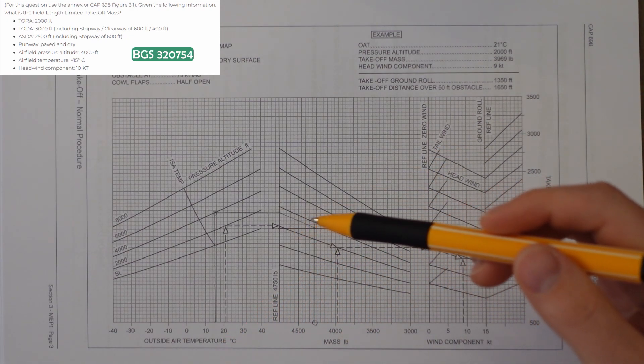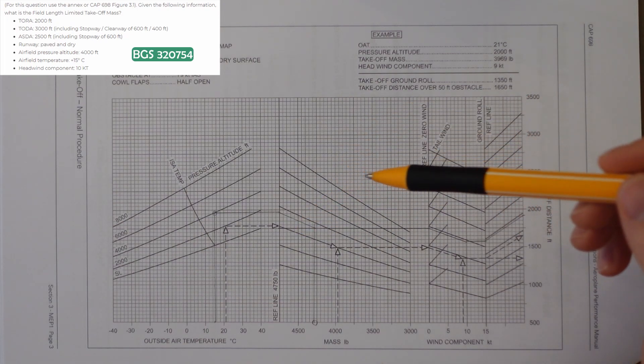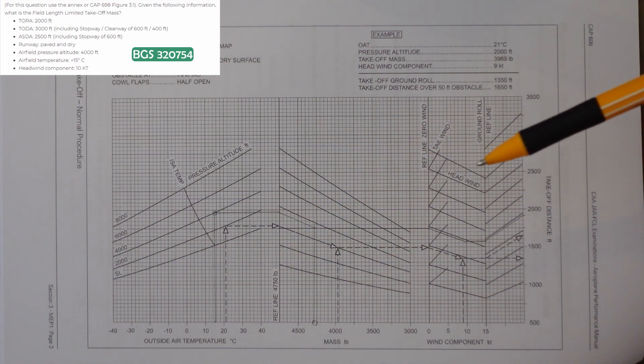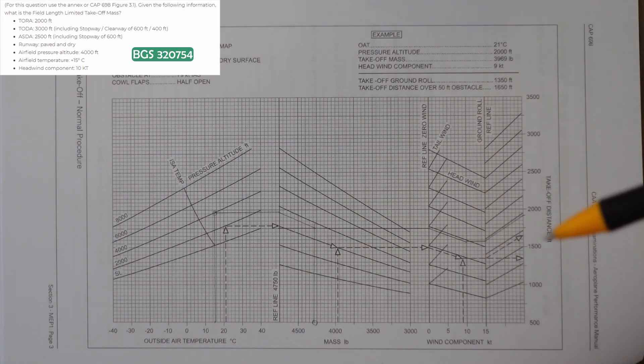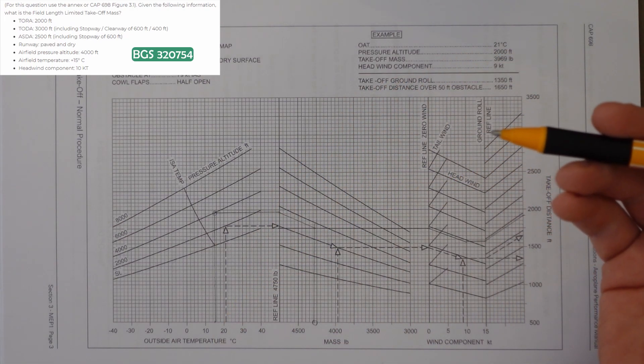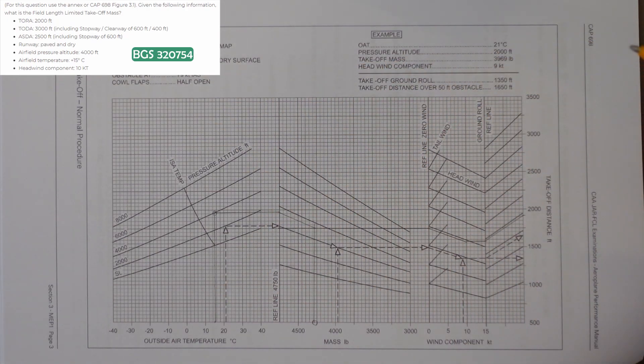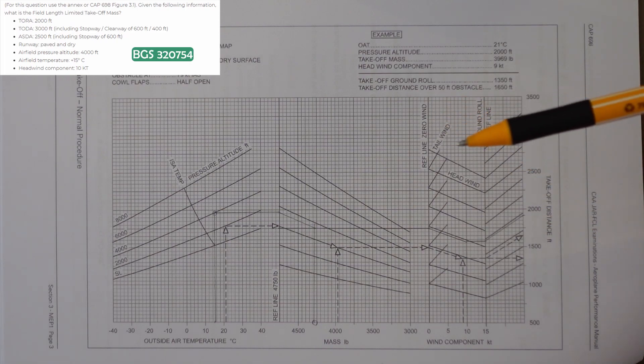We have a takeoff run available of 2,000 feet, takeoff distance available of 3,000 feet, and an accelerate stop distance available of 2,500. It's a paved dry runway, which means no factors in that sense. Pressure altitude 4,000 feet, temperature 15 degrees, headwind 10 knots.